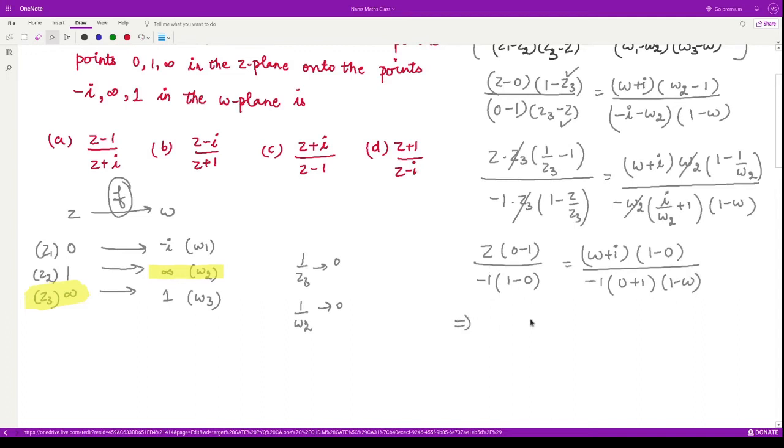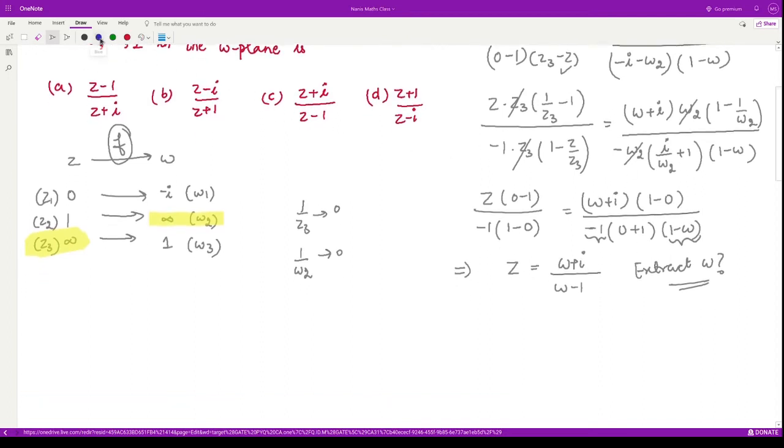We can simplify this. This -1 cancels with this one, so on the left-hand side we only have z. On the right-hand side we have w + i, and from here we can multiply this -1 inside the bracket, so we would have w - 1. From here we are to extract the value of w and we are done.